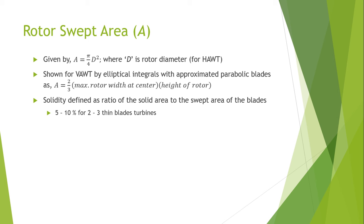The solidity is defined as the ratio of the solid area to the swept area of the blade and it is usually 5 to 10 percent for thin blade turbine with 2 to 3 blades.